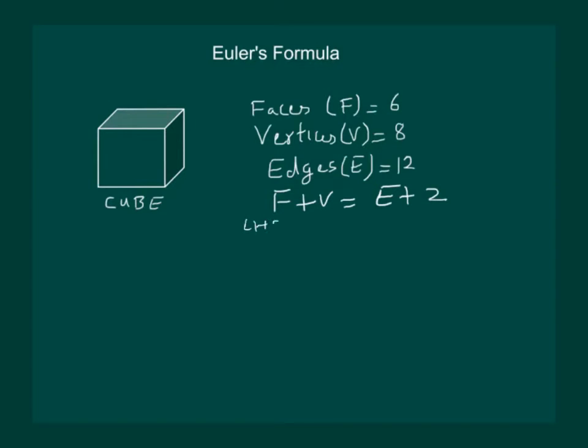Take the left hand side F plus V means 6 plus 8 that's equal to 14. And if we take the right hand side then E plus 2 means 12 plus 2 that's equal to 14. This means the formula holds for cube.